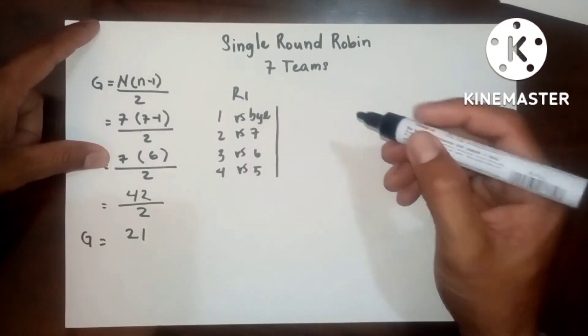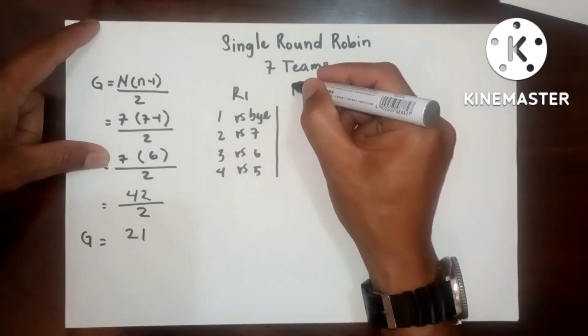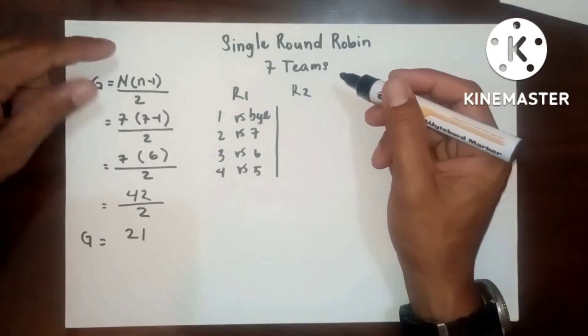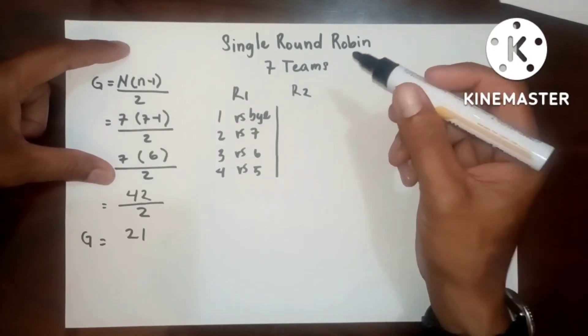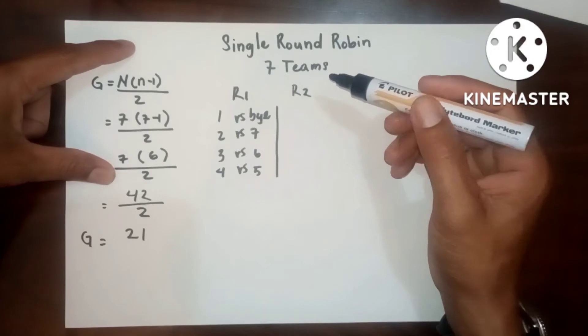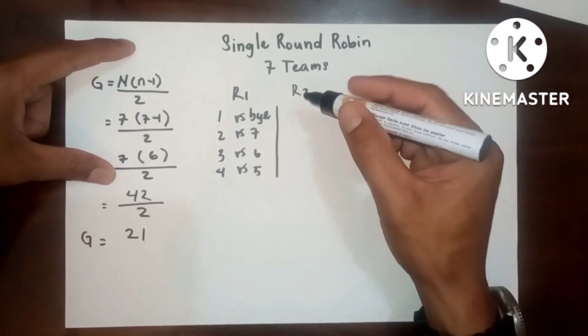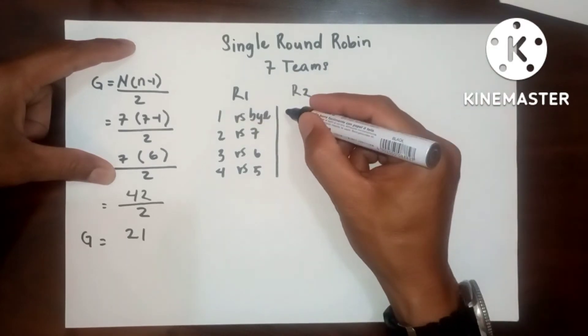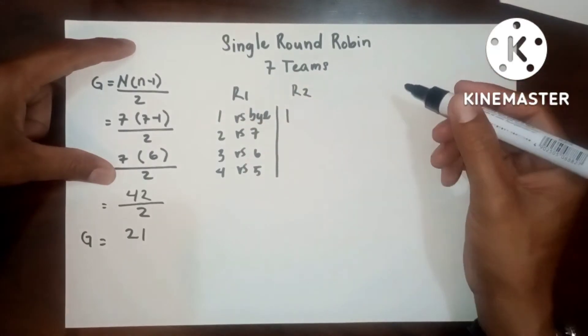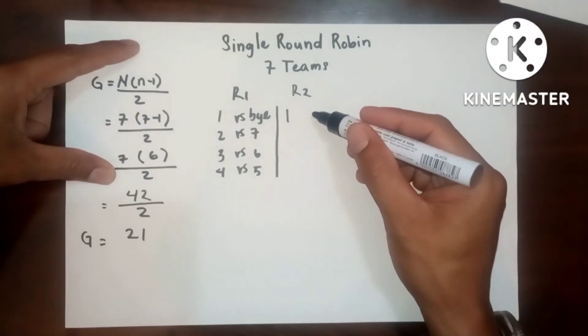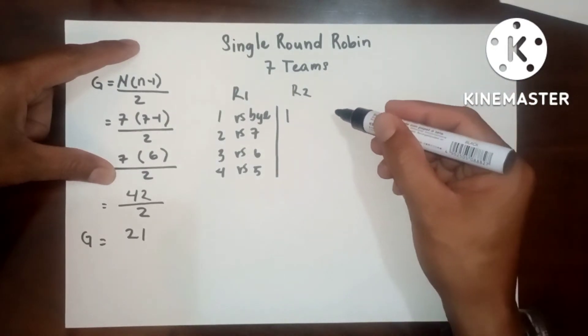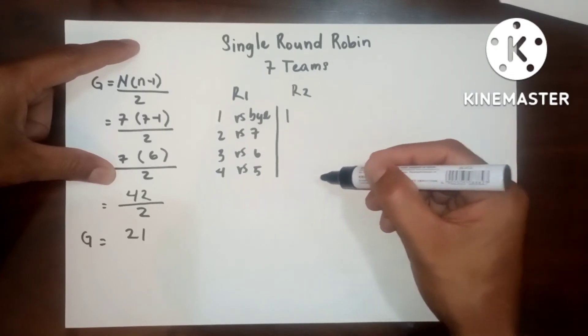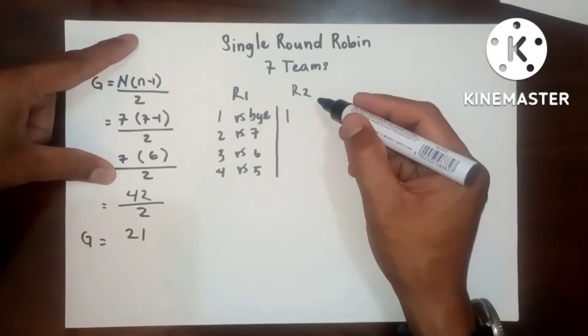Now, let us have Round 2. Always remember that 1 should be permanently placed in this position, and all other number of entries or teams should rotate counterclockwise. Now, let's proceed to Round 2.